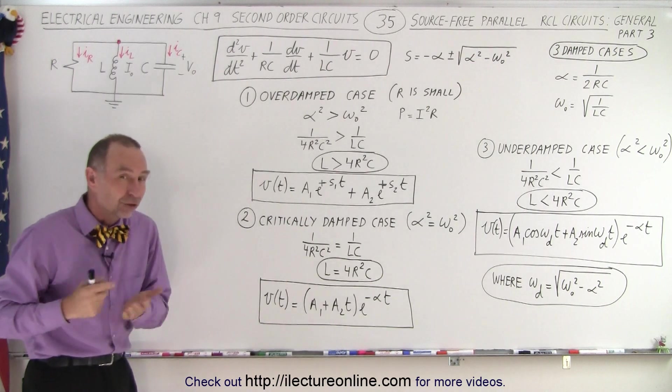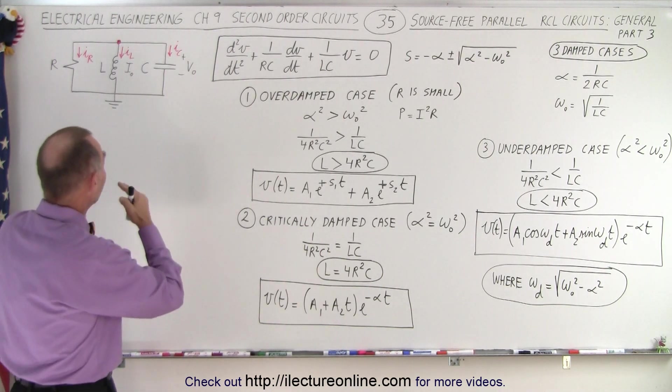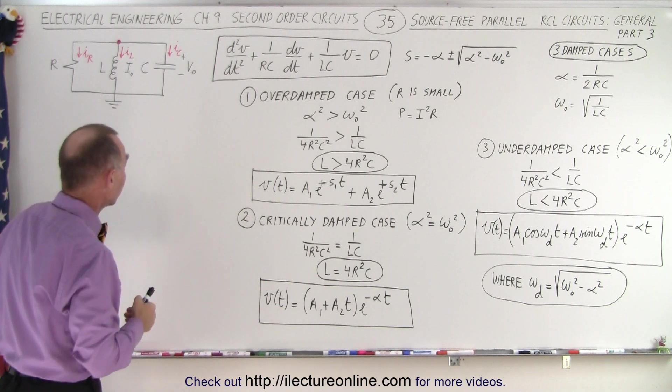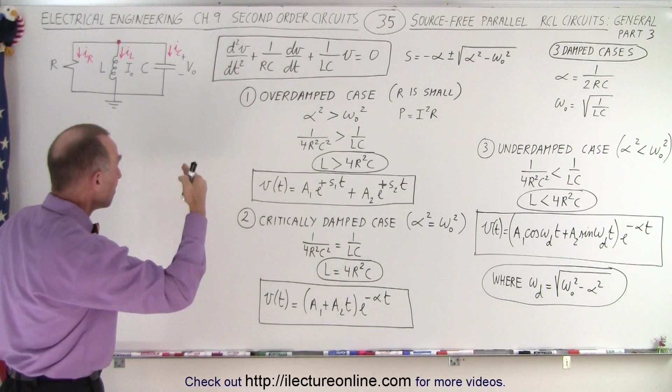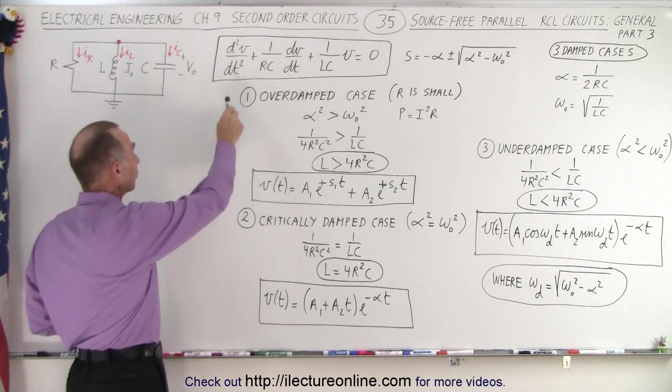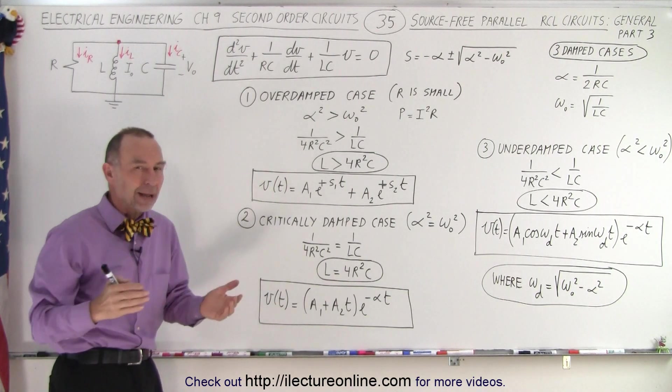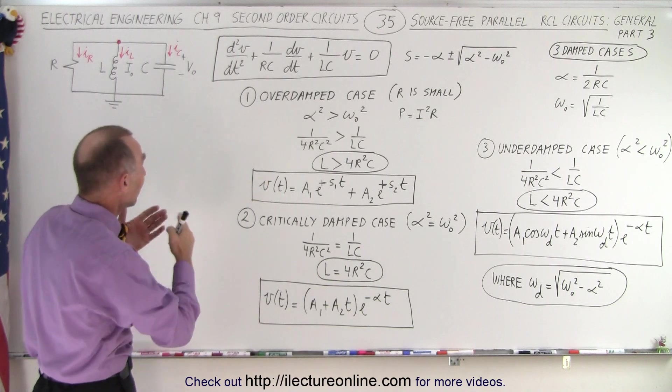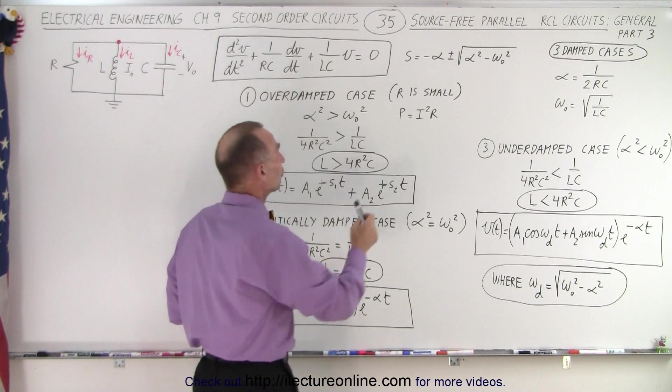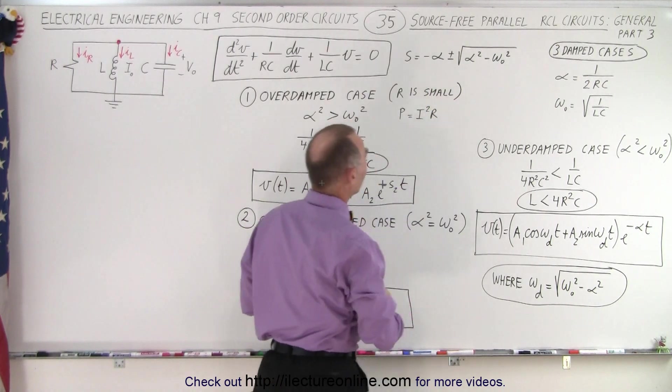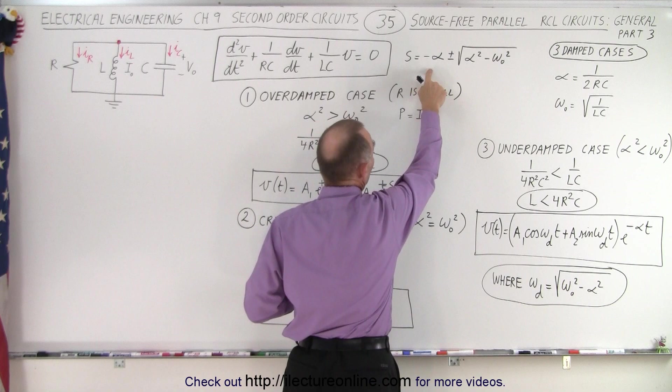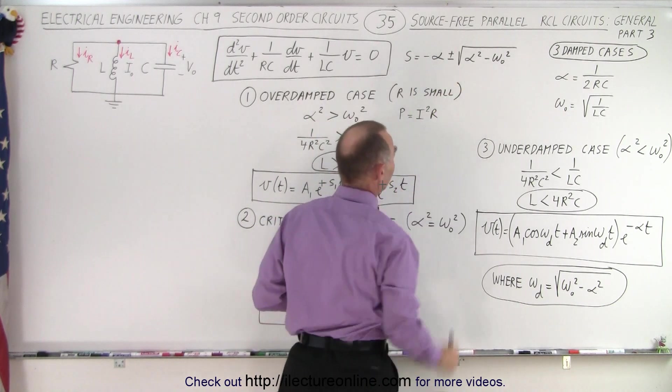We call that an RCL circuit, and it's a source-free RCL circuit. In addition to that, the three components are in parallel, so we call that a source-free parallel RCL circuit. We discovered that this was a differential equation that described the voltage as a function of time for that particular circuit. Then here we used the methodology of getting the characteristic equation to find the solution to that differential equation, where we have alpha and omega sub-naught.